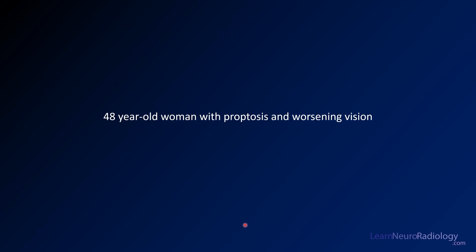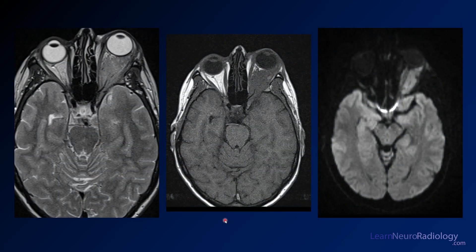The first case is a 48-year-old woman with proptosis and worsening vision. Here you see MR images showing clear proptosis on the left. Normally the interorbital line should pass through the central third of the globe, but here the globe is pooched out. On T2, you see a mass-like infiltration — intermediate T2 signal within the orbit.